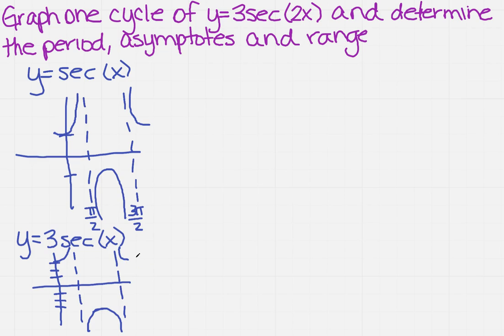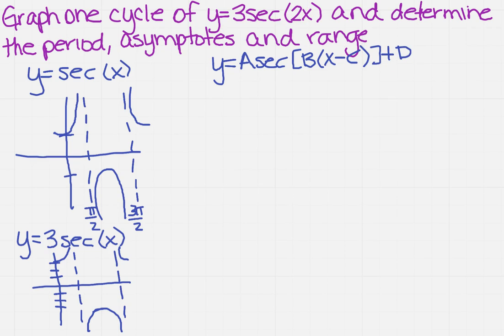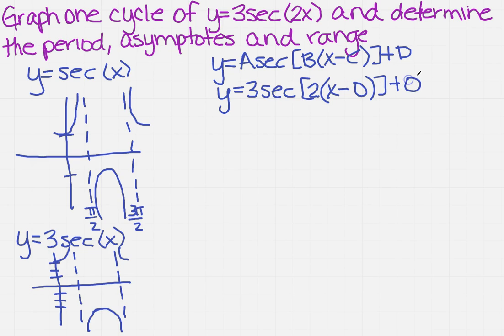Now we need to figure out what the 2x is doing. We use our standard formula: y equals a secant of b times (x minus c) plus d. To put the given function in this form, the 3 in front stays the same. We factor out the 2, so we get 2 times (x minus 0), and since there's nothing added outside, d is also 0. So a equals 3, b equals 2, c equals 0, and d equals 0.